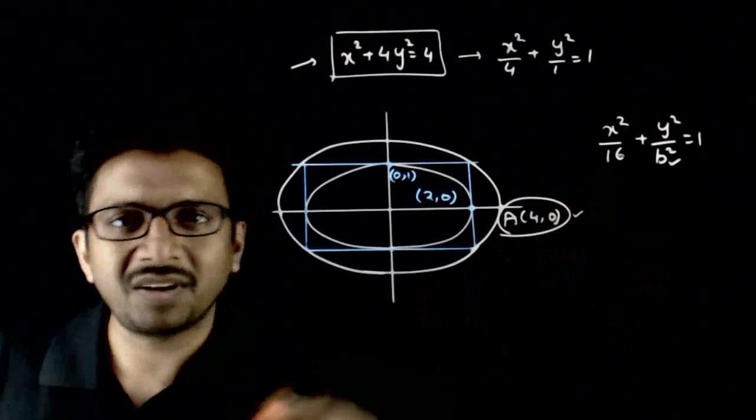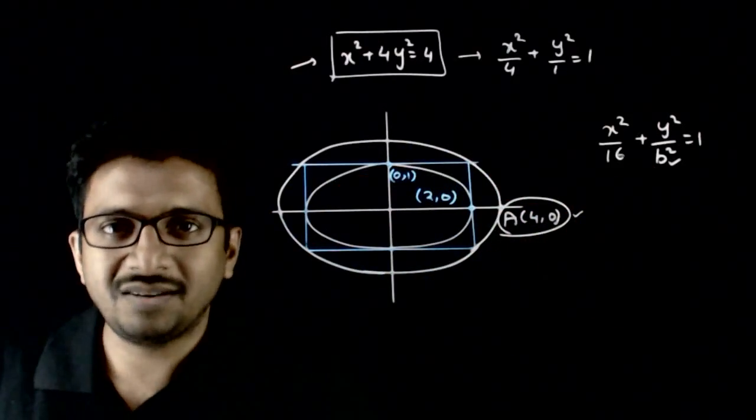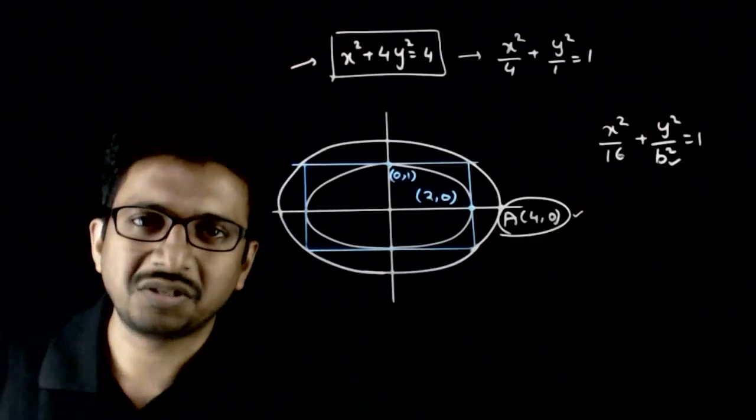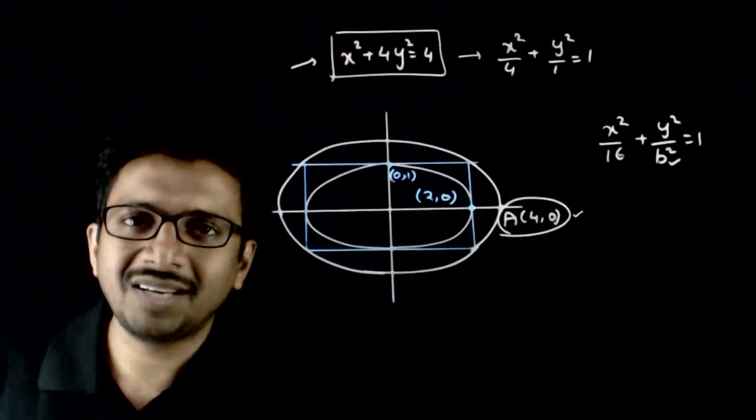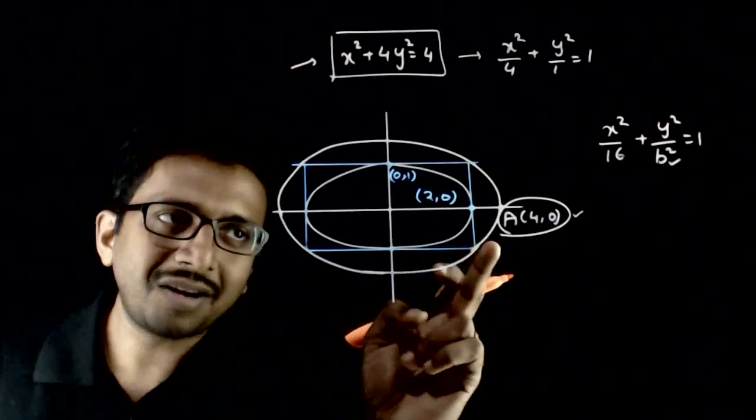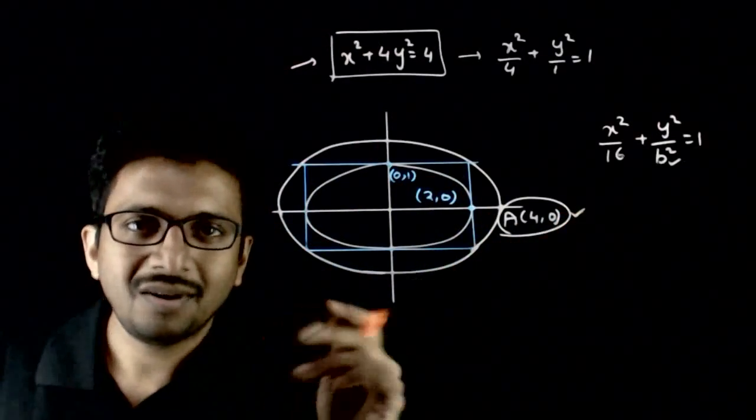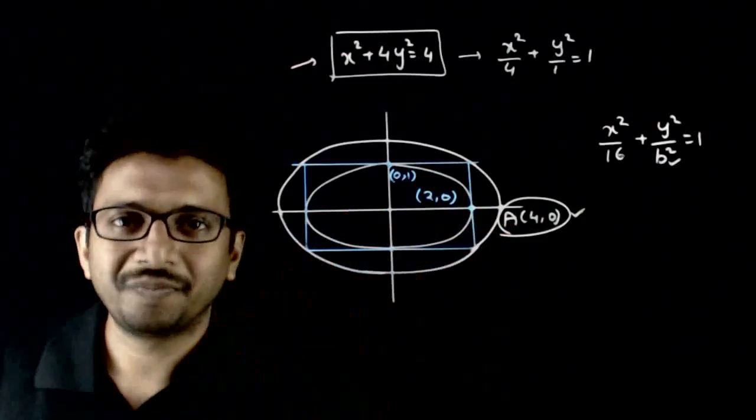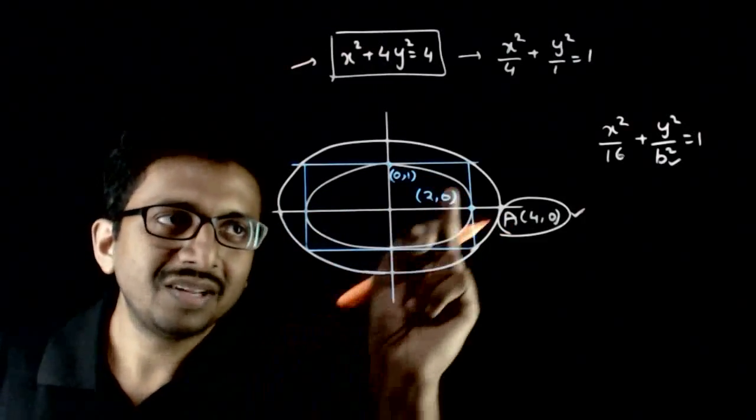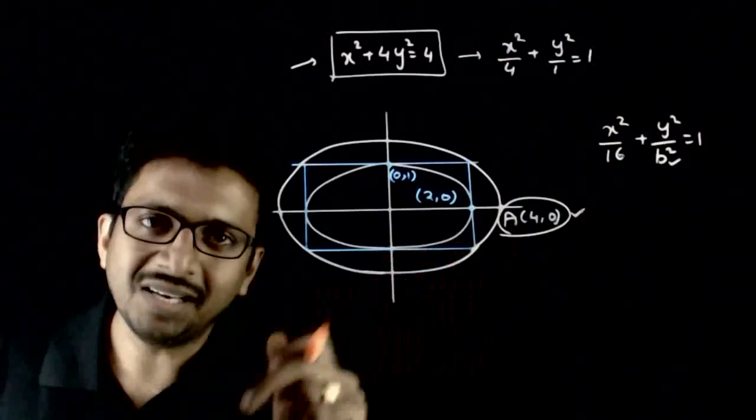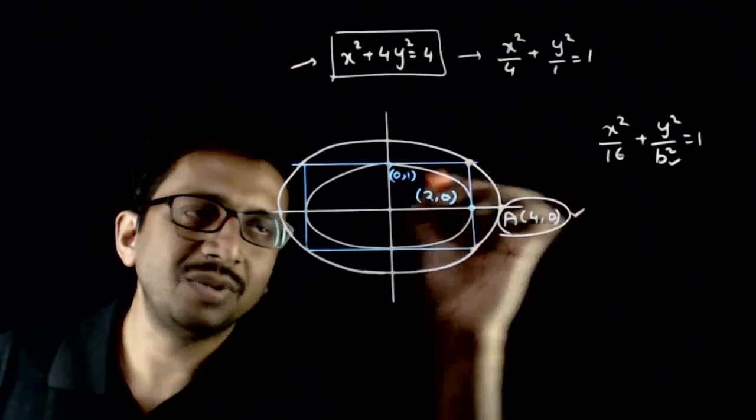If I can find this b, my work is done. So how do I find this b? We need one more information. So from this diagram, do you get that information? What else should this ellipse do? Apart from passing through (4,0), what else should this ellipse do? This ellipse also has to circumscribe this rectangle. That means it has to pass through this point.